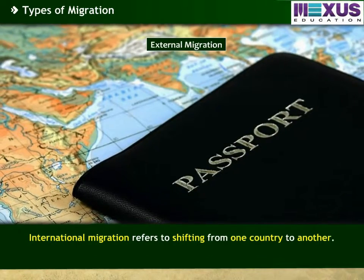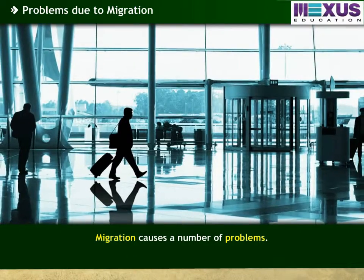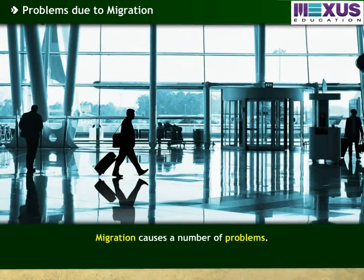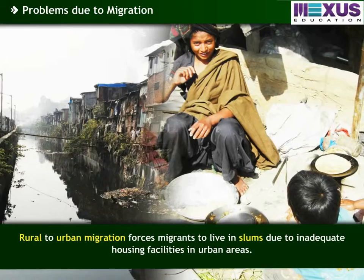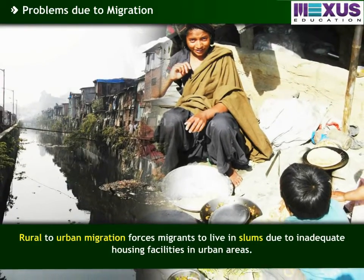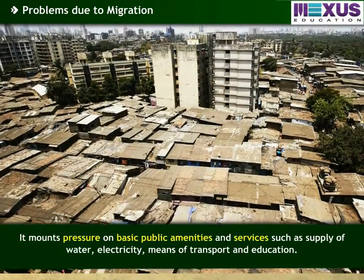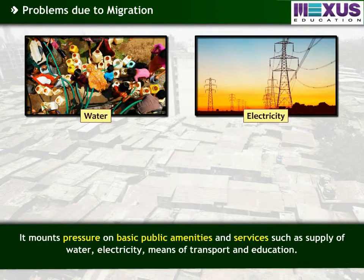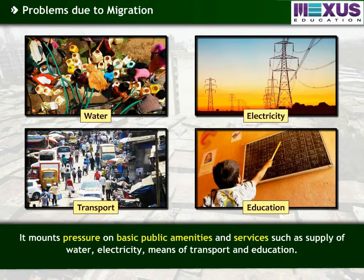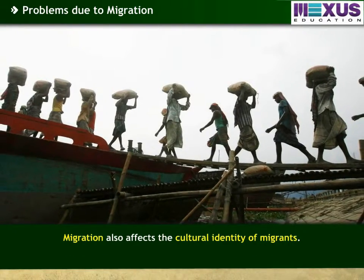International migration refers to shifting from one country to another. Migration causes a number of problems. Rural to urban migration forces migrants to live in slums due to inadequate housing facilities in urban areas. It mounts pressure on basic public amenities and services such as supply of water, electricity, means of transport, and education. Migration also affects the cultural identity of migrants.